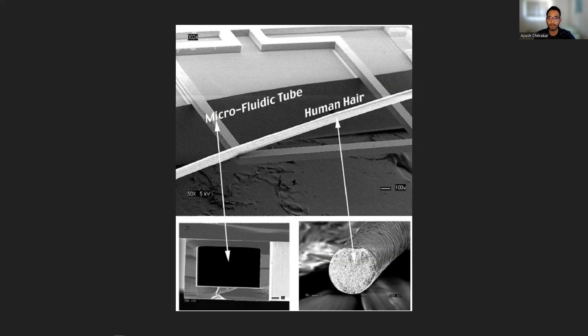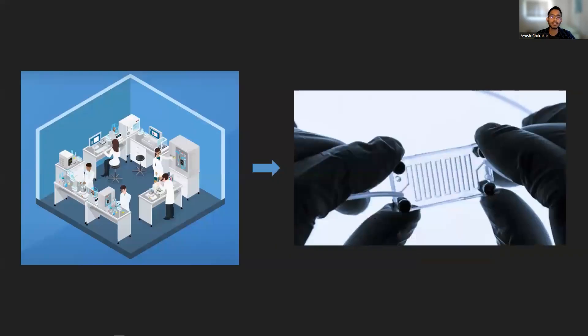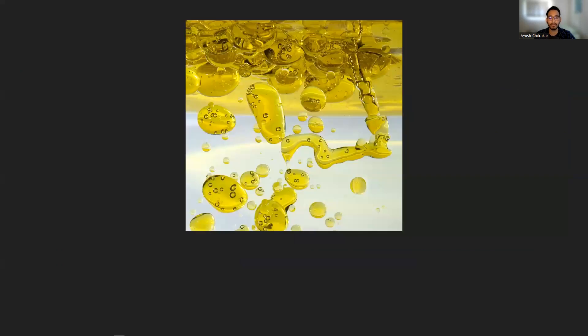Microfluidics is a powerful tool that can reduce the footprint of a lab with tons of equipment down to a tiny chip where many steps of an experiment can be compressed. There are many different types of microfluidic devices, but the ones that I work with are called droplet microfluidics. Droplet microfluidics use liquids that don't mix together, like water and oil, to create these tiny droplets.